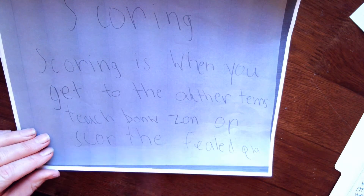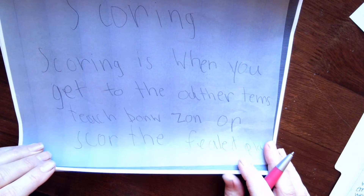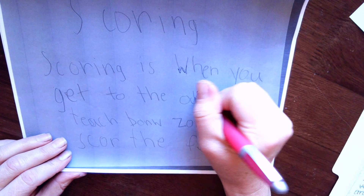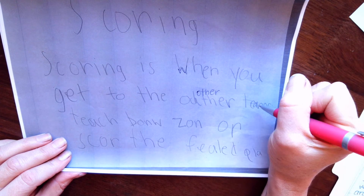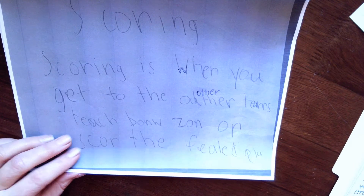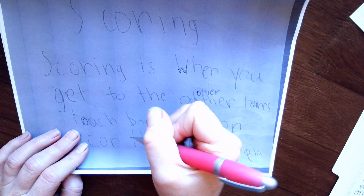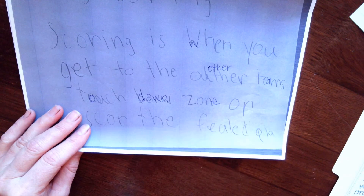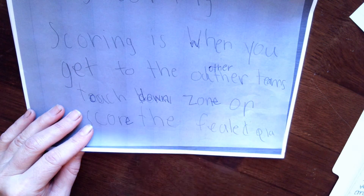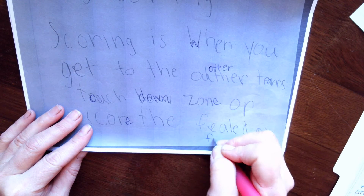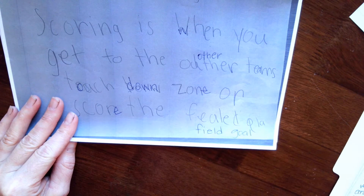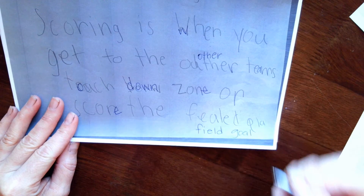The next one is scoring. Scoring is when — this is lowercase — you get to the other team. Team is T-E-A-M-S. Touchdown is T-O-U-C-H-D-O-W-N. Zone is Z-O-N-E. Or score the field goal. Score is S-C-O-R-E. Field is F-I-E-L-D. Goal is G-O-A-L. And then we need a period here.